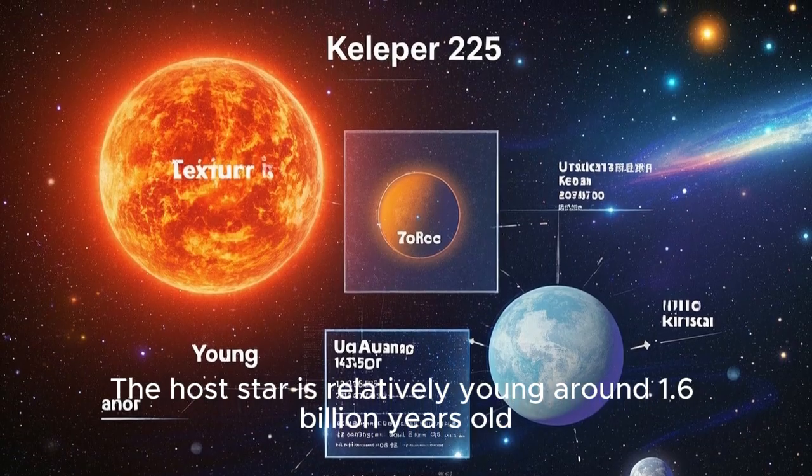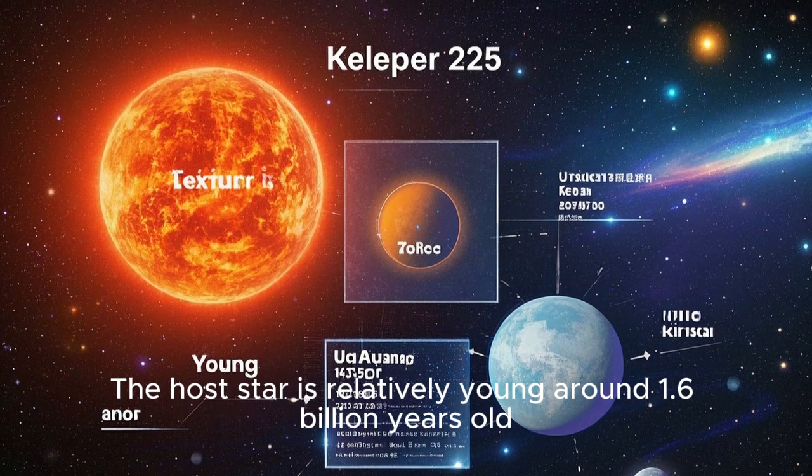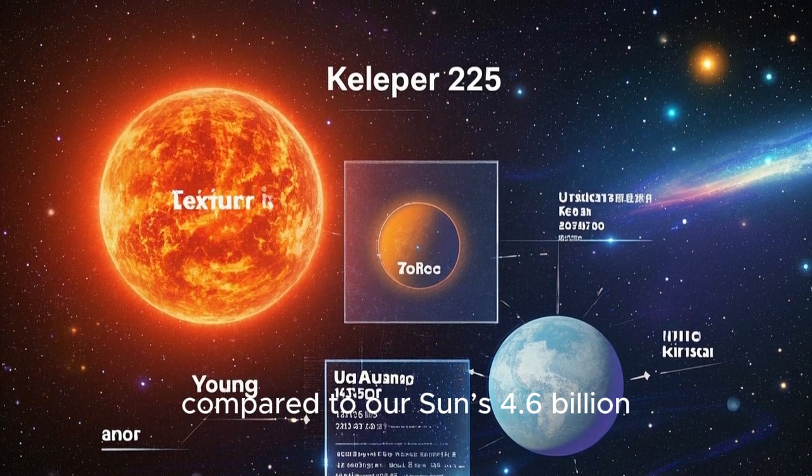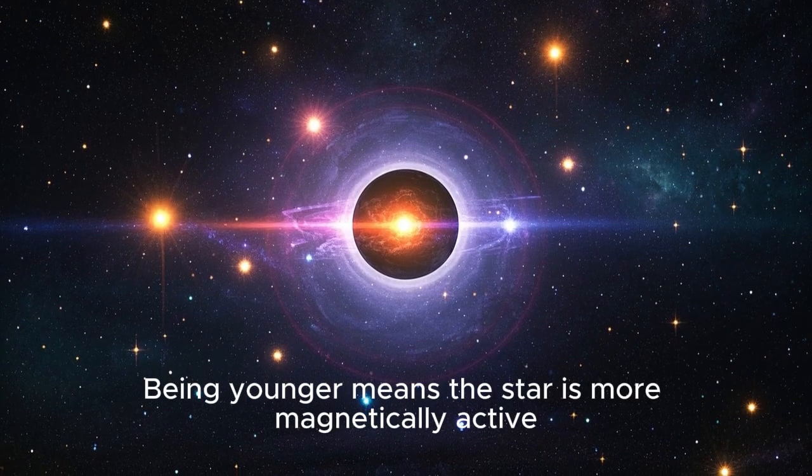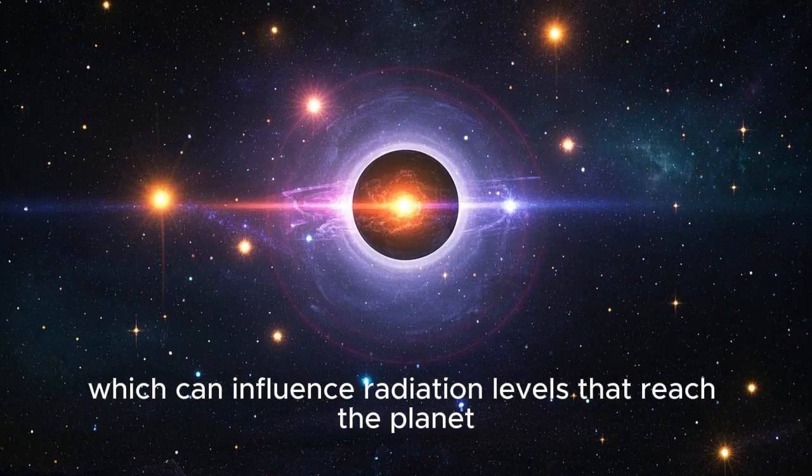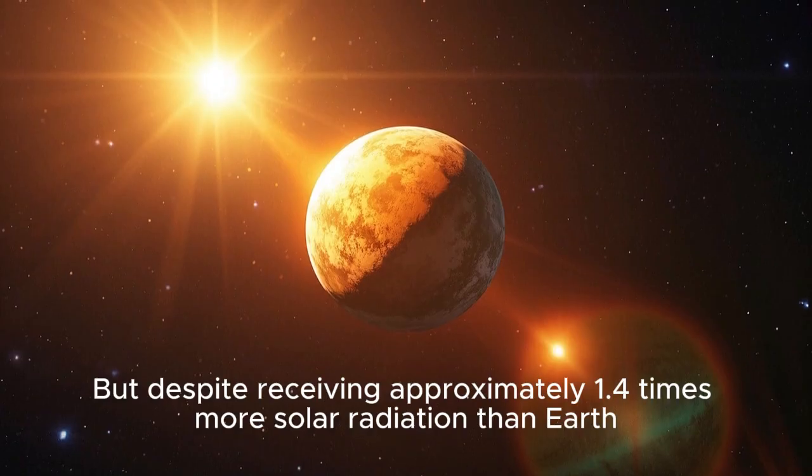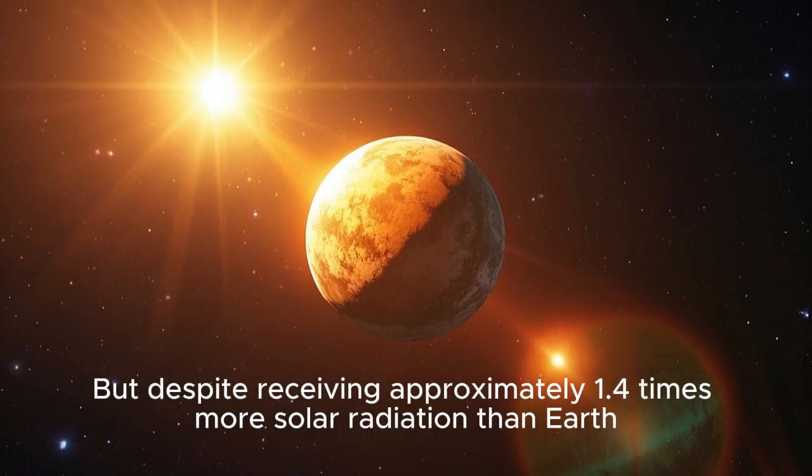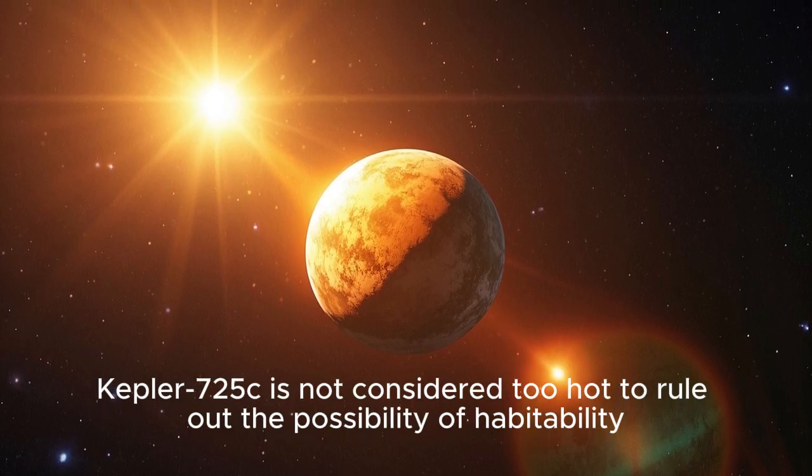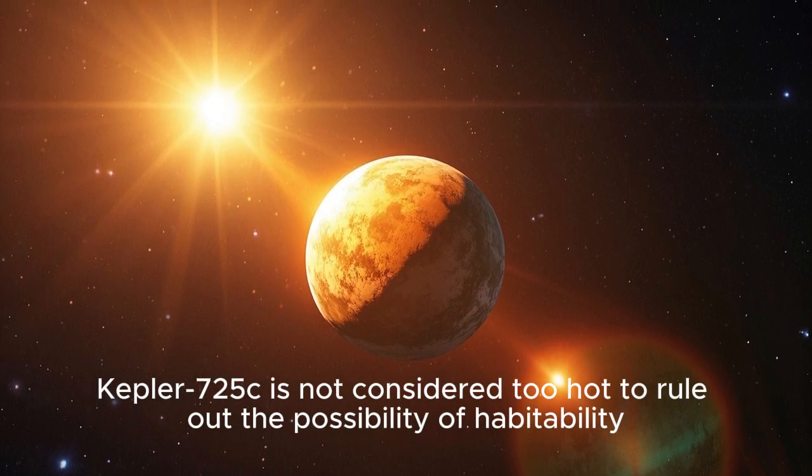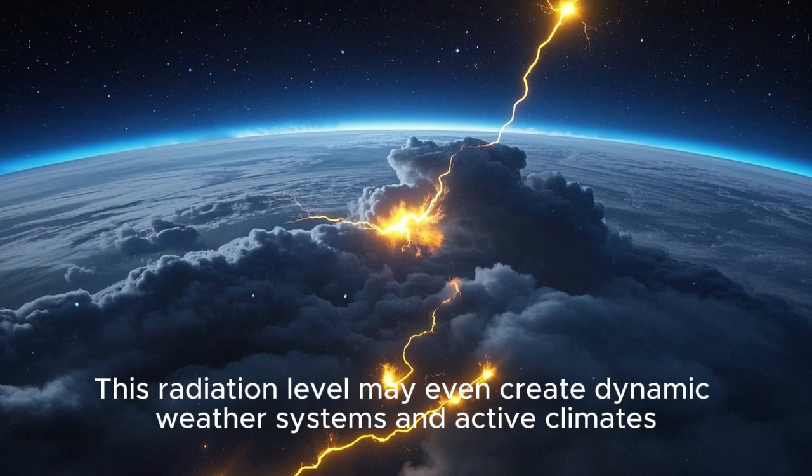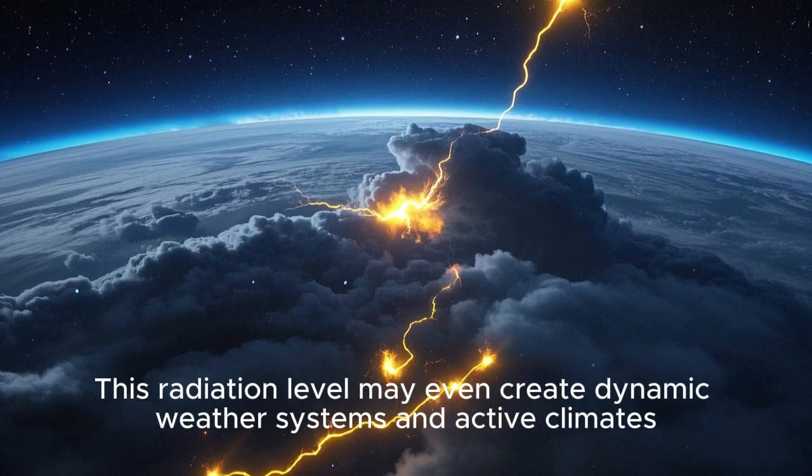The host star is relatively young, around 1.6 billion years old compared to our sun's 4.6 billion. Being younger means the star is more magnetically active, which can influence radiation levels that reach the planet. But despite receiving approximately 1.4 times more solar radiation than Earth, Kepler-725c is not considered too hot to rule out the possibility of habitability. This radiation level may even create dynamic weather systems and active climates.